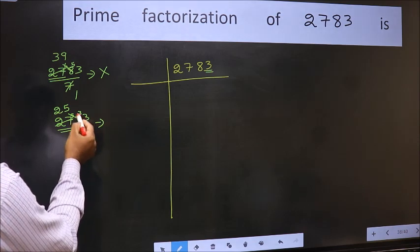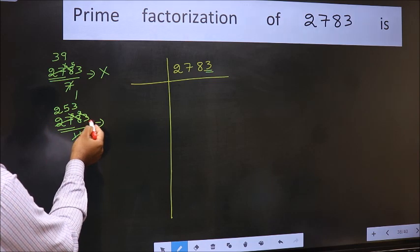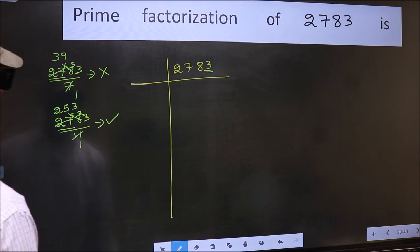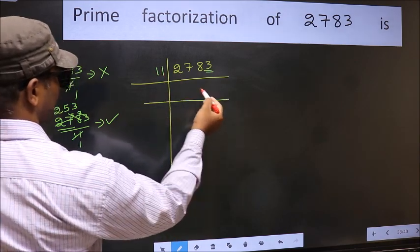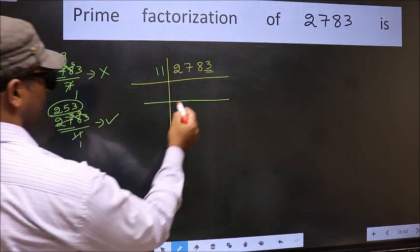When do we get 33 in 11 table? 11×3 is 33. No number has been left out. So this is divisible by 11. So take 11 here. And here we should write this number 253.